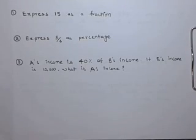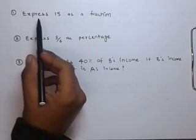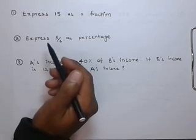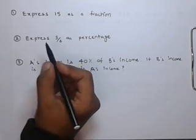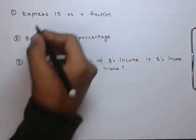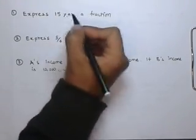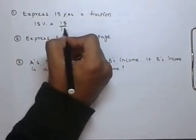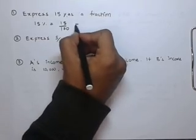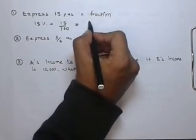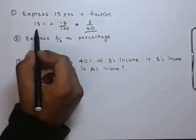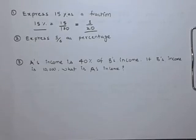Now we will understand the concept of percent through some problems. In the first problem, we have to express 15% as a fraction. As stated earlier, percentage is nothing but per 100. So 15% can be written as 15 upon 100, which simplifies to 3 upon 20. So 3 upon 20 is the fraction form of 15%.